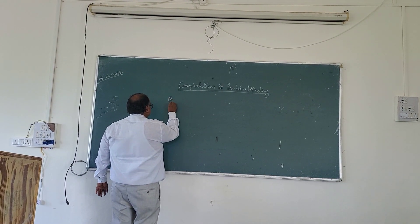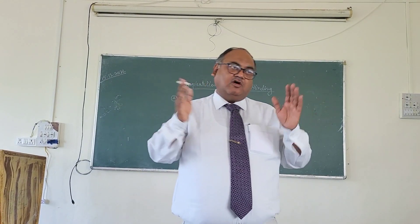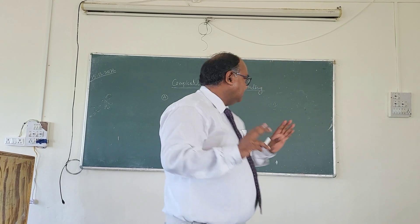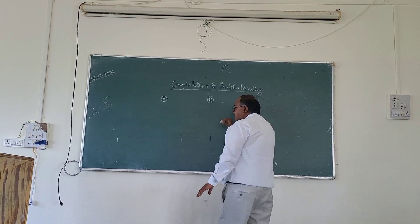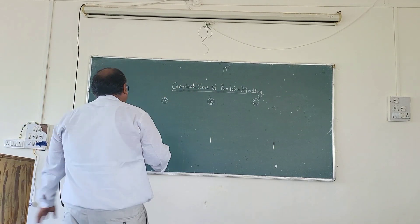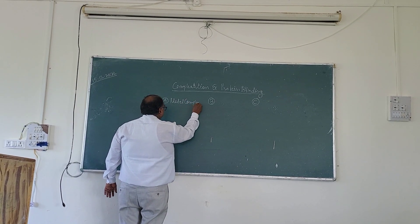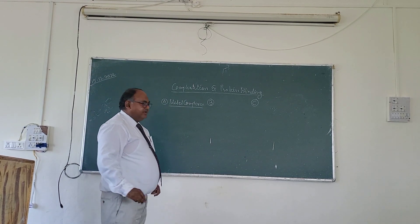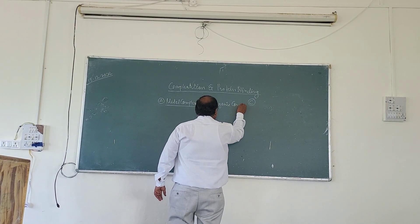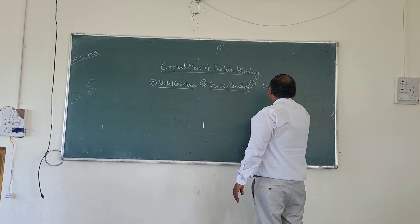I classified the complexes into three types. The first two types are based on the acceptor species that is involved in the complexation. There is a third type of complexes which is based on the geometry of the complexes. The first type we call them as the metal complexes. The second type we call them as organic complexes or organic molecular complexes. And the third type, which is a special type, we call them as the inclusion complexes.